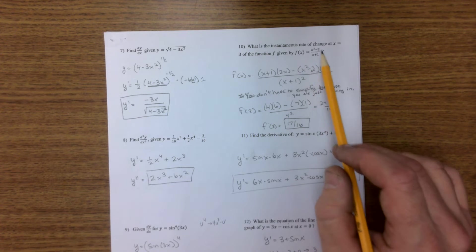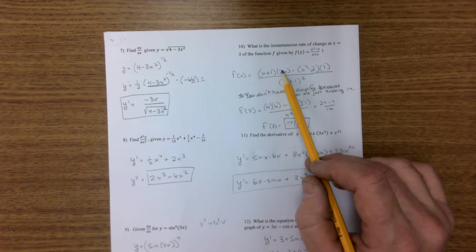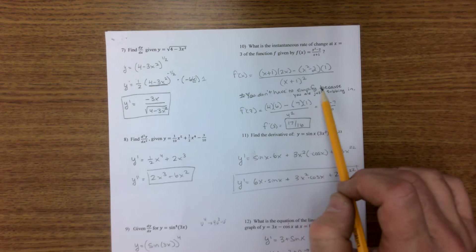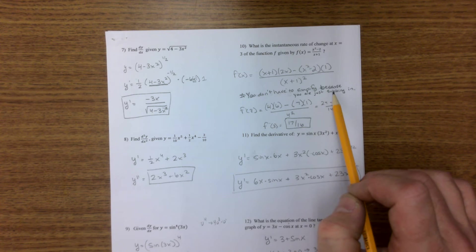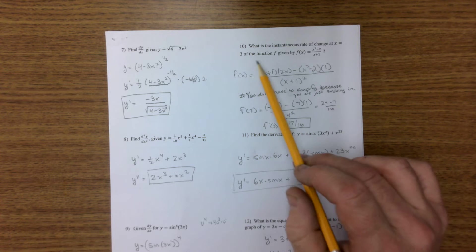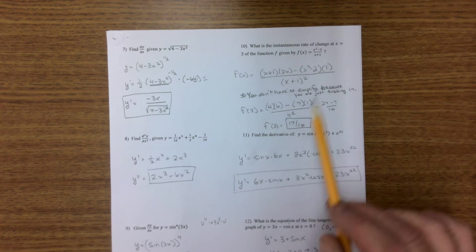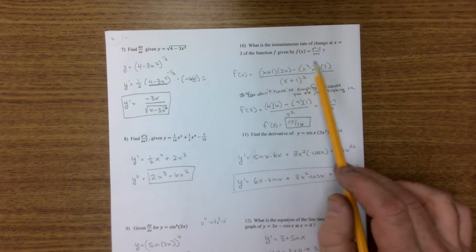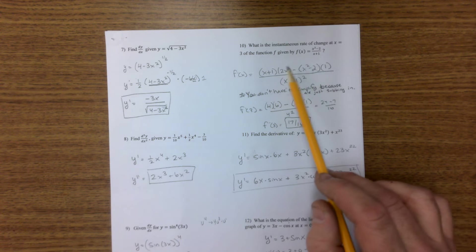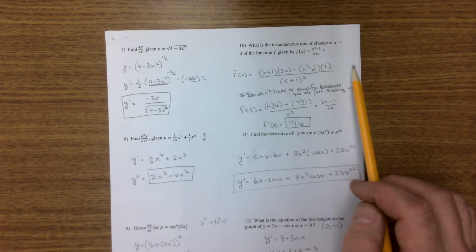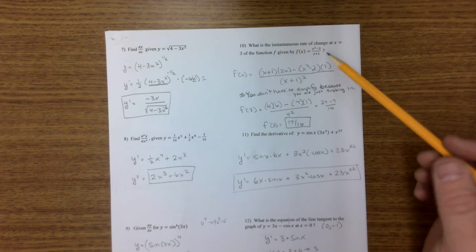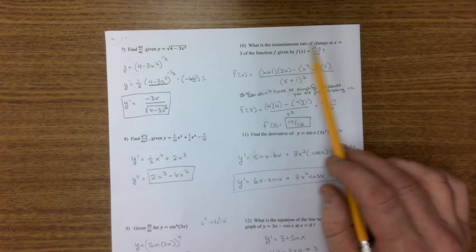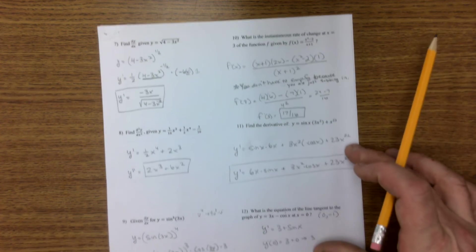Instantaneous rate of change means find the slope. Well, I did low d high minus high d low over low squared. And I'm not going to bother simplifying this because all I have to do is substitute it in. So if I plug in a 3 here, here, here, here, here, these are the numbers I get. Figure it out here and do this. You could simplify if you want to, but it's not necessary. If I'm plugging in, it's just as easy for me to plug in here than risk the chance of simplifying wrong. So if you're substituting in, don't bother simplifying.